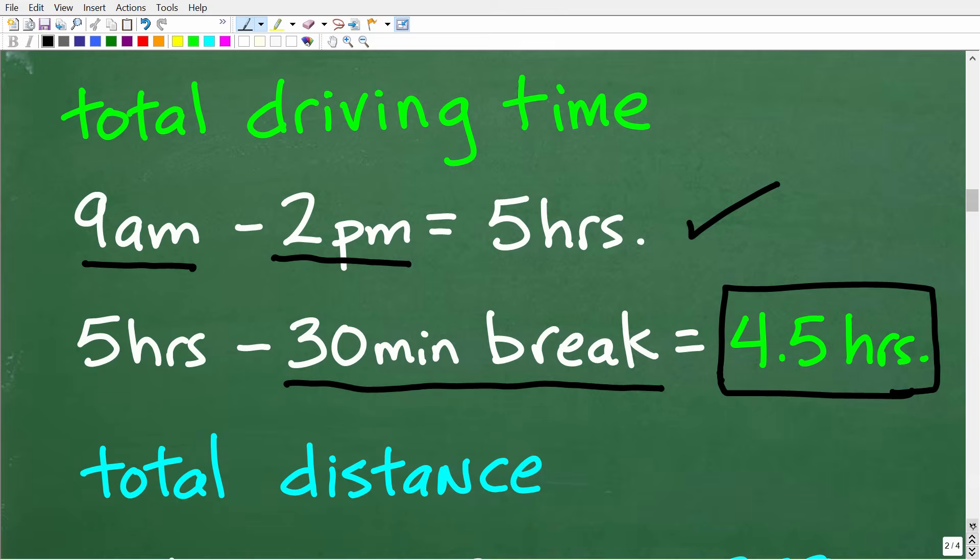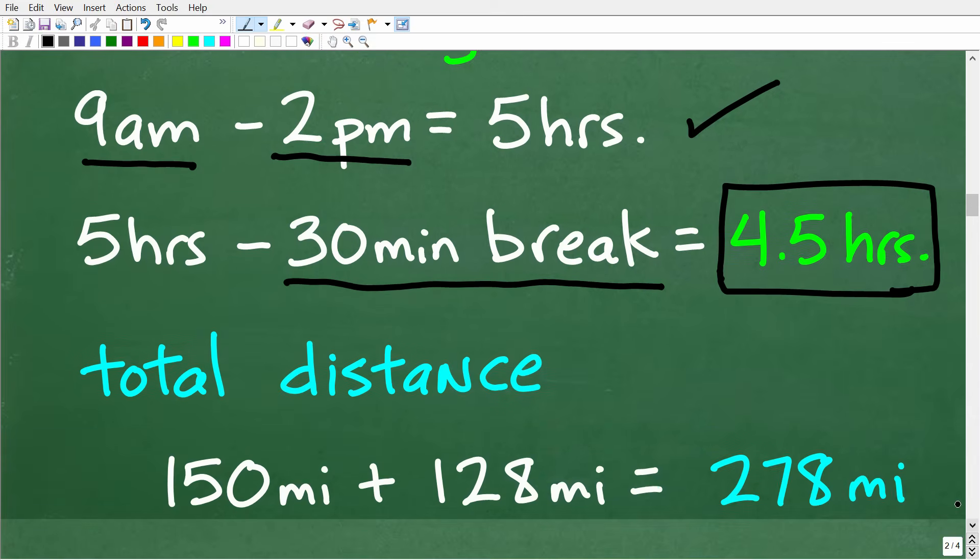How much distance did this truck cover? Well, in its first leg, it went 150 miles, and then its second leg, it went 128 miles for a total of 278 miles. So we have our distance and we have our time.